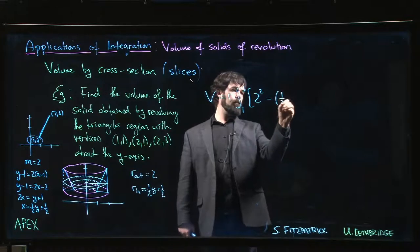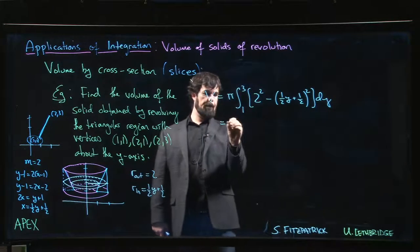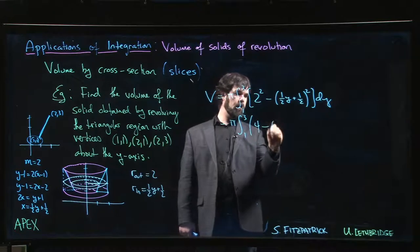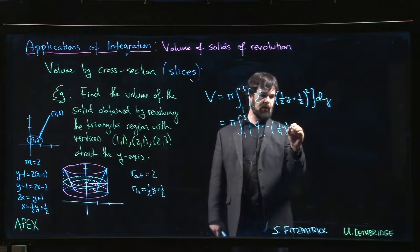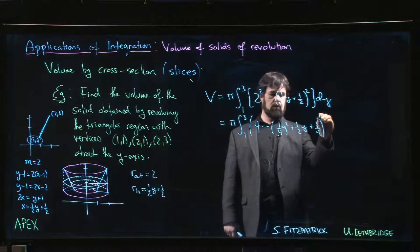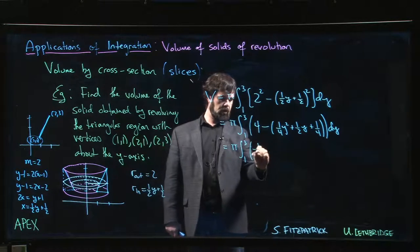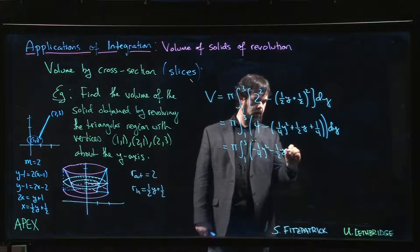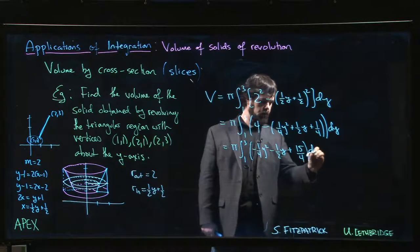Let's actually just multiply everything out, simplify things. 2 squared is 4, so here we're going to get 1/4 y squared, cross term is 1/2 y. So if we simplify that, we have minus 1/4 y squared minus 1/2 y plus 15/4.